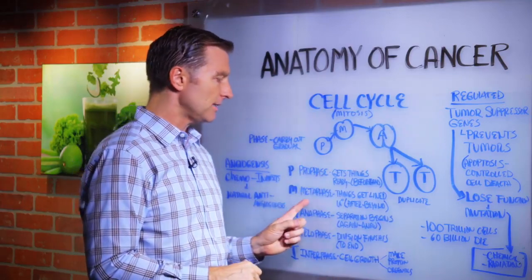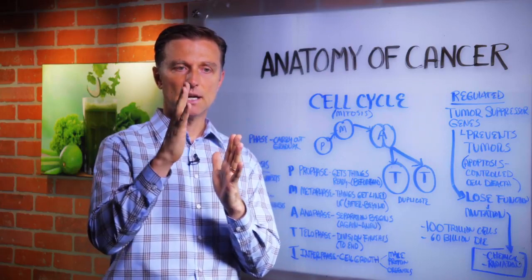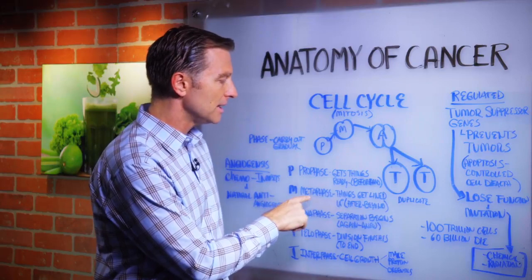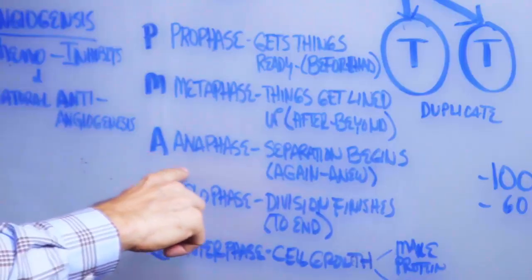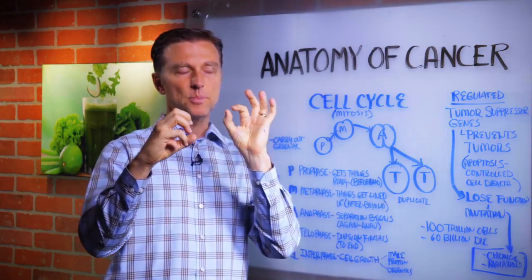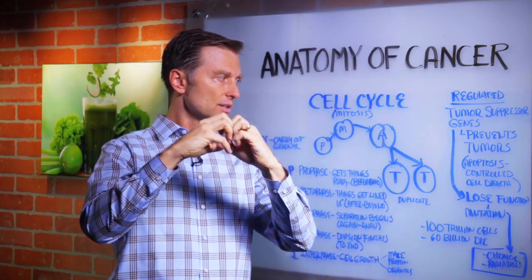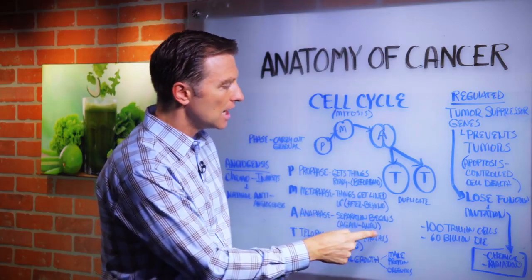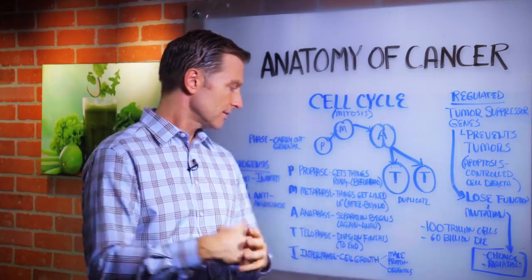Then you have the metaphase, where all the DNA strands get lined up. The derivation of 'meta' means after or beyond, so it's after the prophase. Then we get to the anaphase, where the actual separation starts. We have a perfect duplicate of the DNA in each cell and they're starting to divide — the cell membrane is closing. The derivation of 'ana' means again, anew, so this cell is becoming new again.